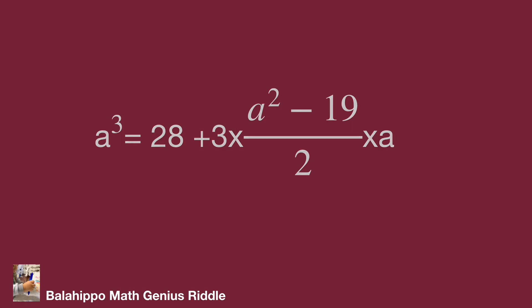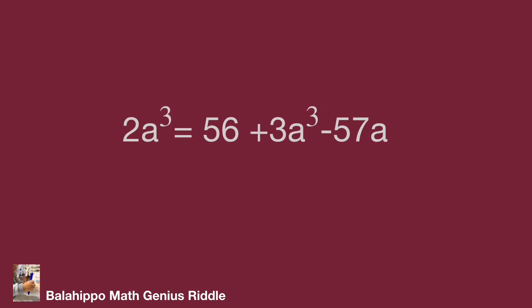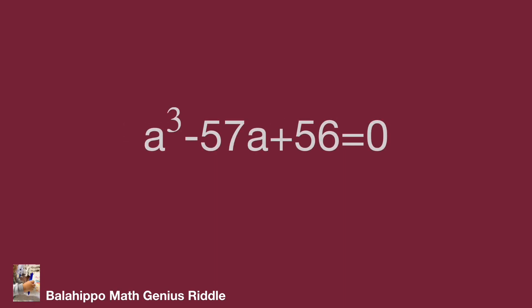Then 2a cubed equals 56 plus 3a cubed minus 57a. Simplify to get a cubed minus 57a plus 56 equals 0.